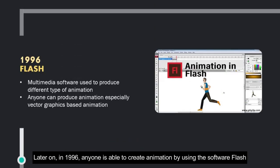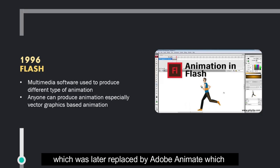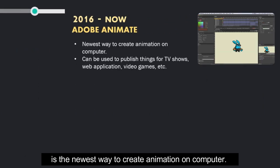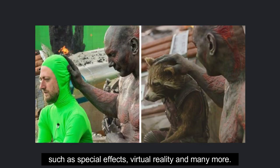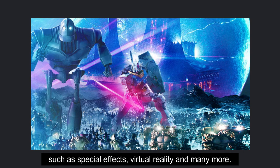Later on, in 1996, anyone is able to create animation by using the software Flash, which was later replaced by Adobe Animate, the newest way to create animation on computer. Now, computer animation continues to emerge with new abilities such as special effects, virtual reality, and many more.